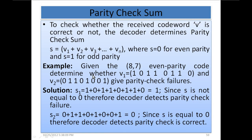Given the 8,7 even parity code, determine whether V1 = 1,0,1,1,0,1,1,0,1 and V2 = 0,1,1,0,1 give parity check failures. For V1: S1 = 1⊕0⊕1⊕1⊕0⊕1⊕1⊕0⊕1 = 1, since there are five 1s (odd). Since S ≠ 0, the decoder detects a parity check failure — an error has occurred. The result should have been 0 for even parity. For V2: S2 = 0⊕1⊕1⊕0⊕1 = 0. Since S = 0, the decoder detects the parity check is correct — no error has occurred.